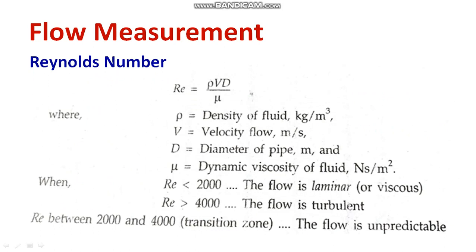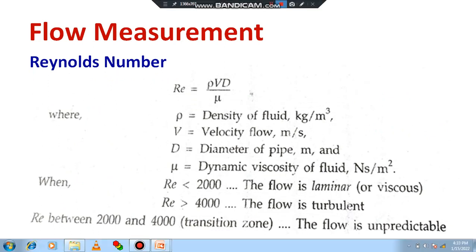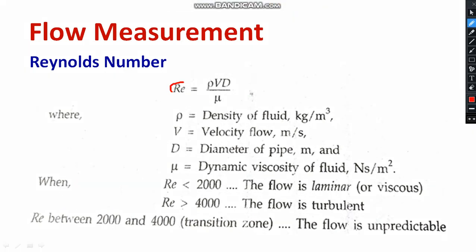By checking one parameter called Reynolds number, you can calculate it using the simple formula rho V d by mu, where rho is the density of fluid in kilogram per meter cube, V is the velocity of fluid flow, d is the diameter of the pipe, and mu is the dynamic viscosity in terms of Newton second per meter square. If the value of Reynolds number is less than 2000, then you can say that fluid flow is laminar.